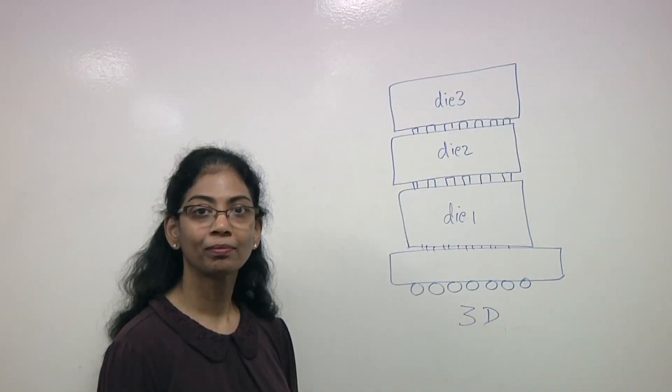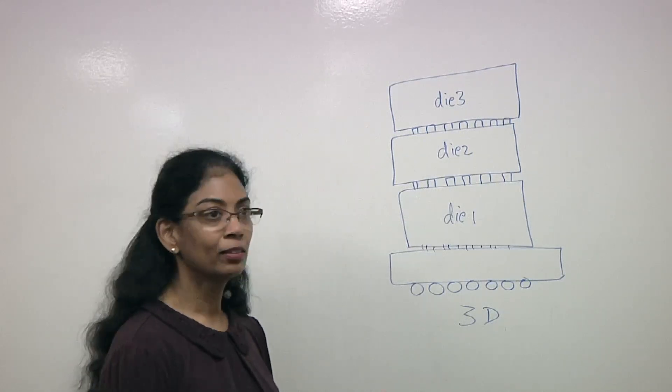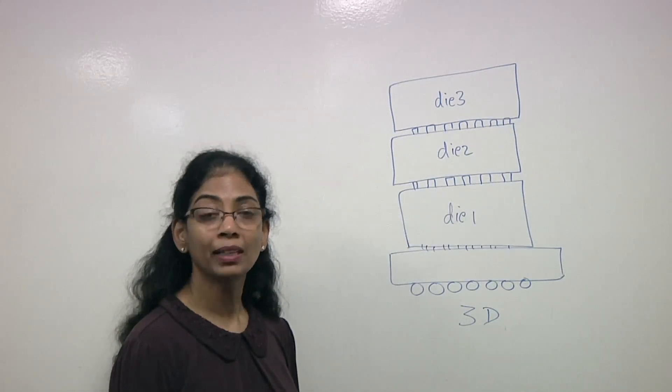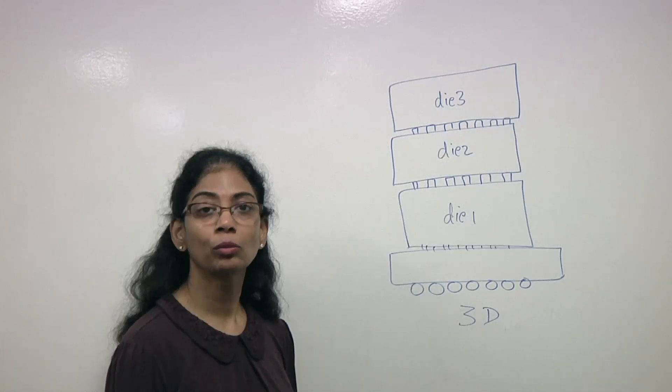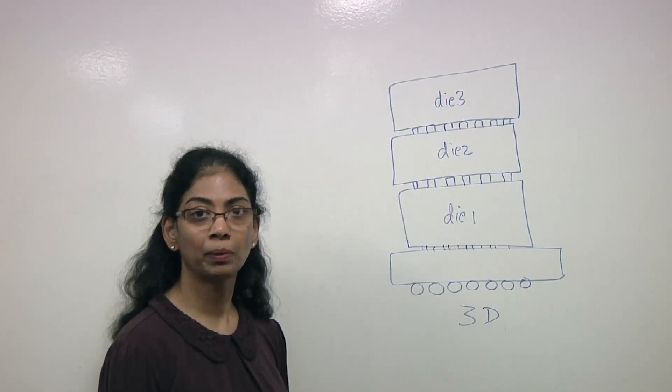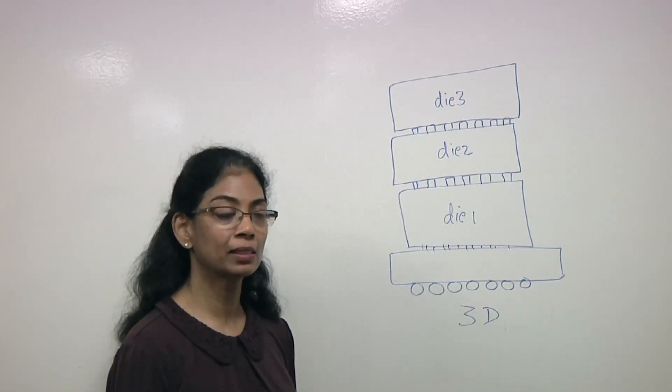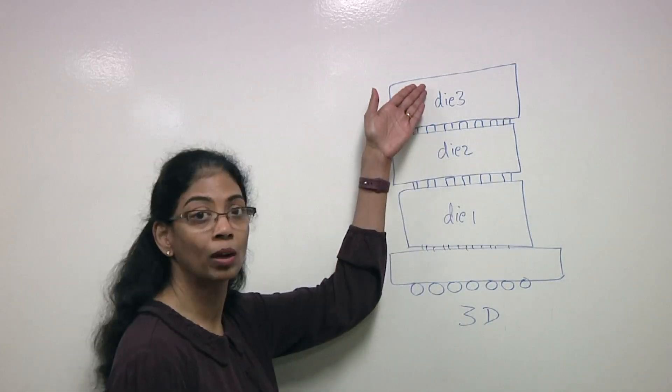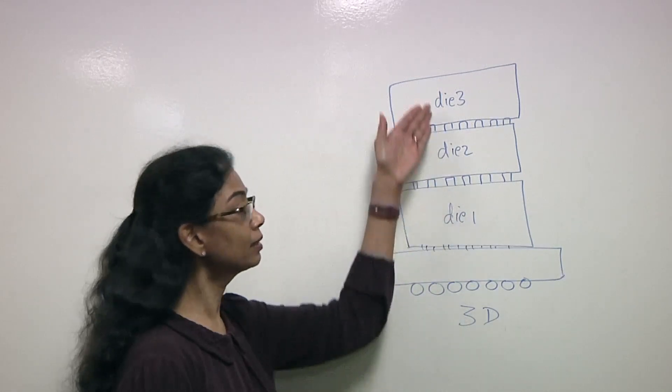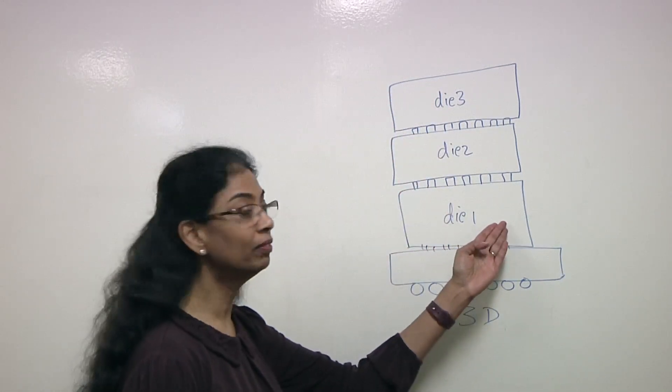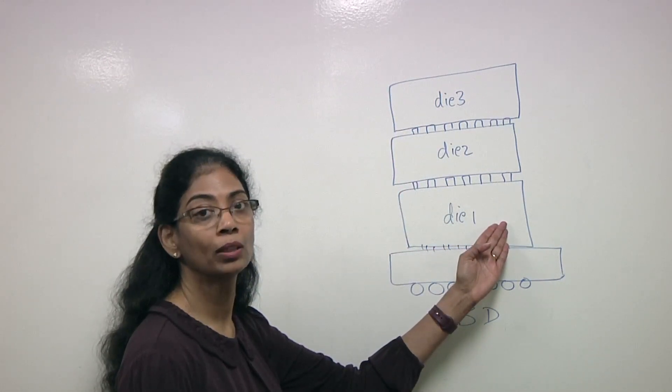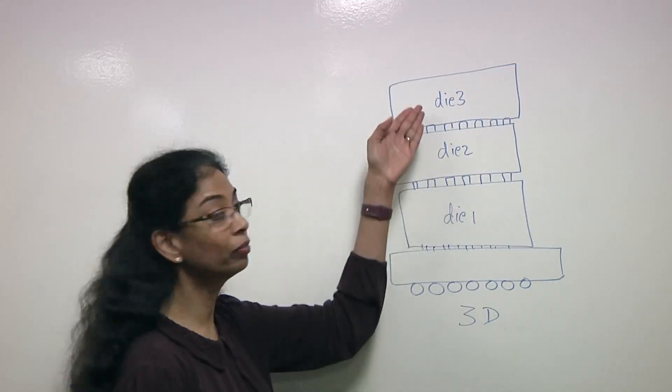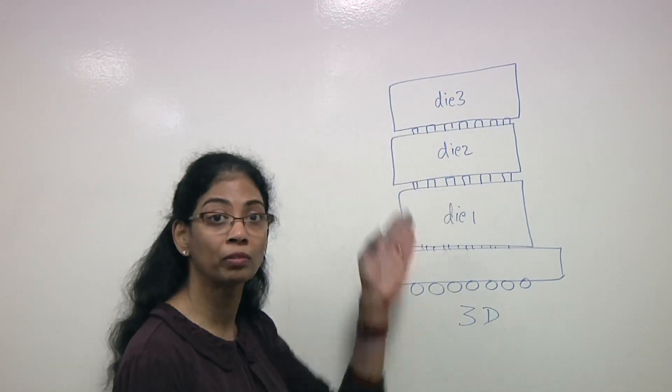Looking at a 3D IC, what changes? Well, in the 2.5D, you may have access to each of the individual dies or chiplets through minimum access pins. But in a 3D, the dies are truly stacked one on top of each other. And so the access mechanism is only via the bottom die. There is no other way in which you can access any of the other dies that are stacked on top of it.